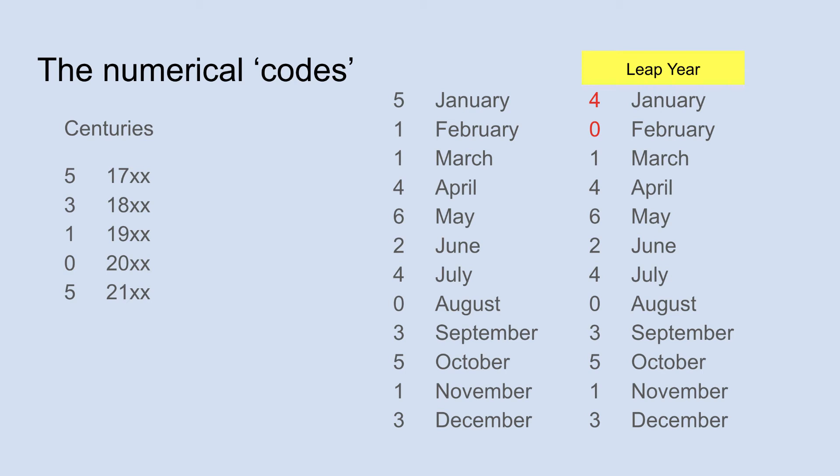There is one exception to this list, and that is for leap years. The only adjustment is for January and February. In a leap year, we subtract one from each, so instead of 5 and 1, January and February become 4 and 0. All other months remain the same — the leap year adjustment only affects January and February.